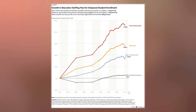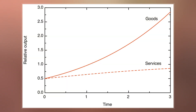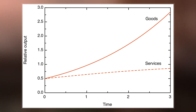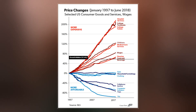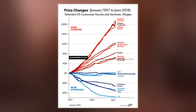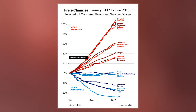For instance, if the retail sector pays its managers 19th-century-style salaries, the managers may decide to quit to get a job at an automobile factory where salaries are higher because of high labor productivity.